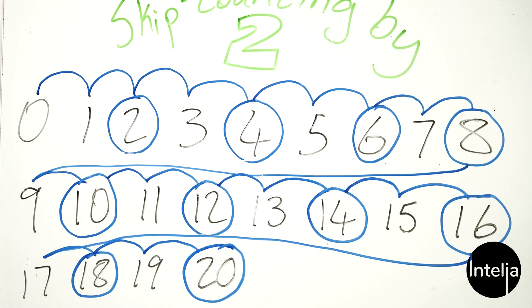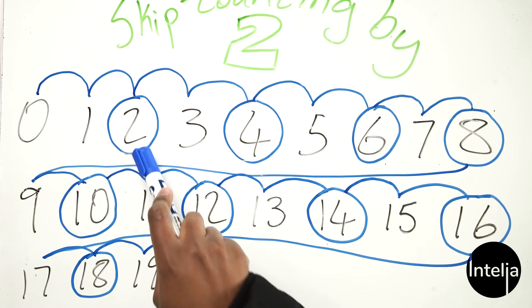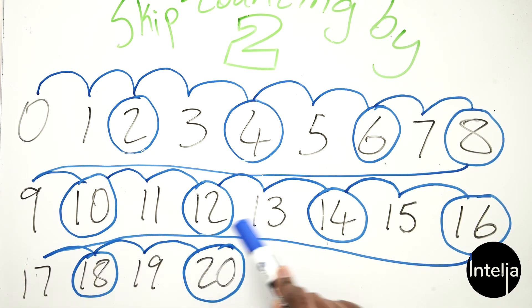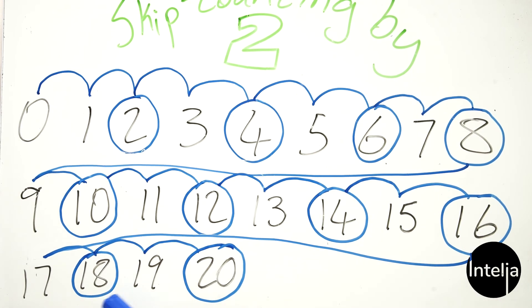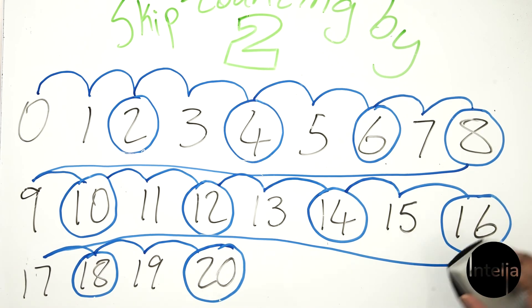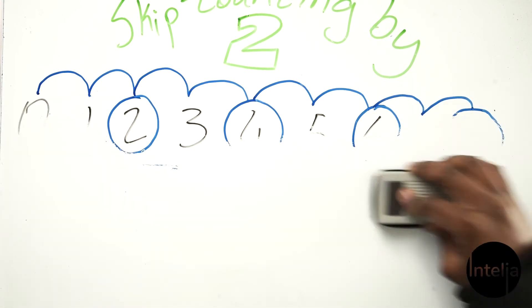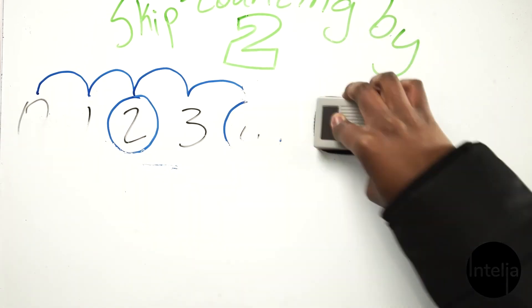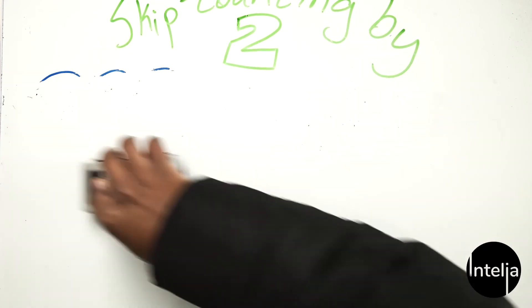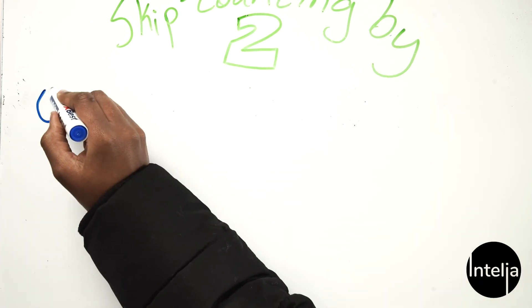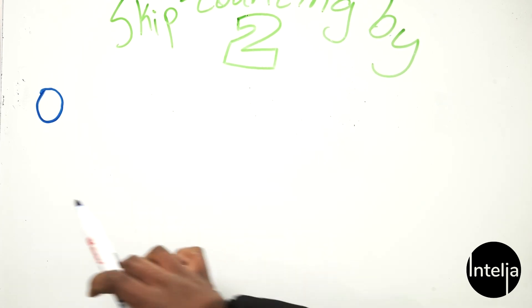There you go! Now let's count from the beginning all the way to twenty. Well done! Now let's write them down neatly from zero all the way to twenty. Help me, friends — from zero to twenty.